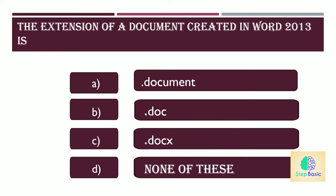The extension of a document created in Word 2013 — options are: A. Document, B. Doc, C. Docx, or D. None of these. The answer is C, Docx.